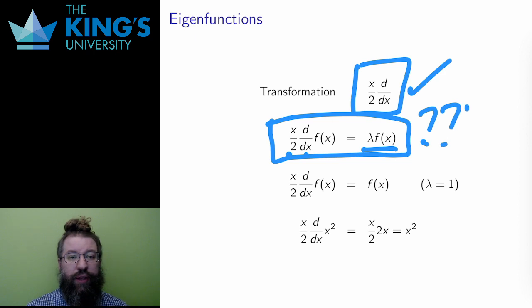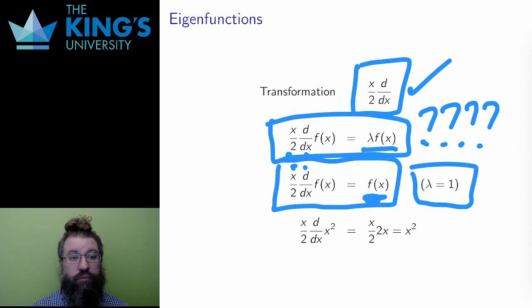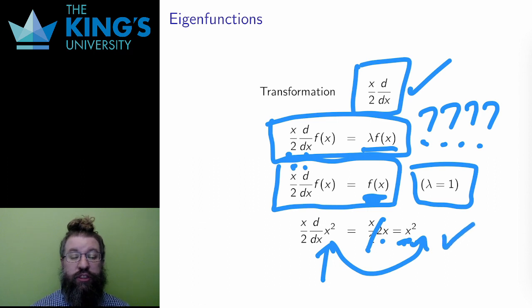What function has this property? This is not immediately clear. However, I could ask for a specific eigenvalue. So what about λ = 1? What function has the property that its derivative multiplied by x/2 is the same as the original? This I know, the function f(x) = x². If I differentiate, I get 2x by the power rule. Then if I multiply by x/2, the 2s cancel out, and I get x, the x's combine to get x², which is the original function again. This function is an eigenfunction specifically for the eigenvalue λ = 1 of the operator x/2 times d/dx.